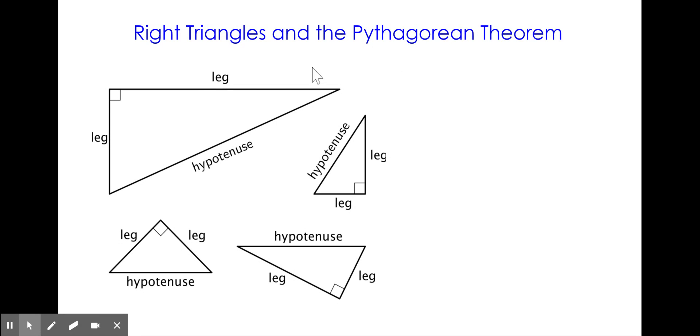A right triangle is a triangle that has one 90 degree angle, and the hypotenuse is the longest side of the triangle, and it is also opposite the right angle.